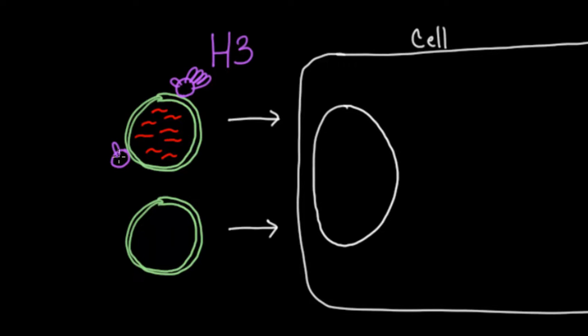I'll do one more hemagglutinin protein here. And remember, it looks like a hand because it holds on to sialic acid. And you've got some neuraminidase over here. Neuraminidase is going to nick the sialic acid, it's going to help the virus exit. And let's say this is N2. So we've got H3N2 as the top virus.